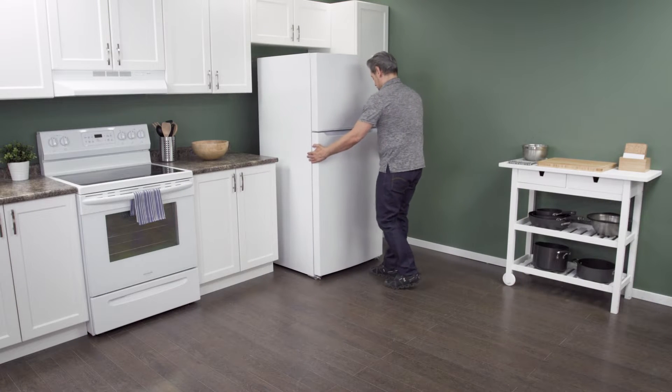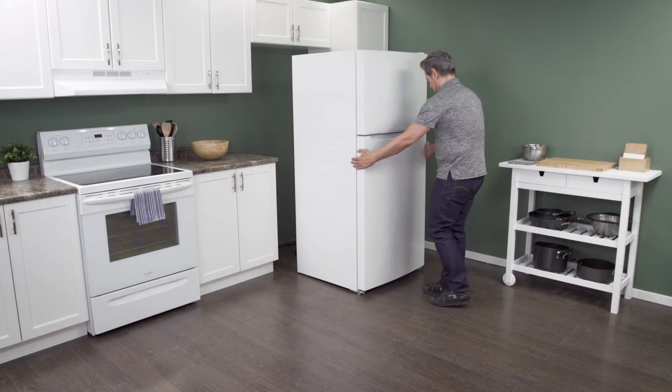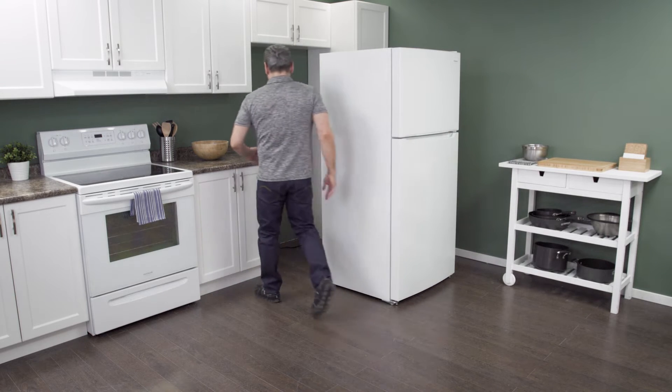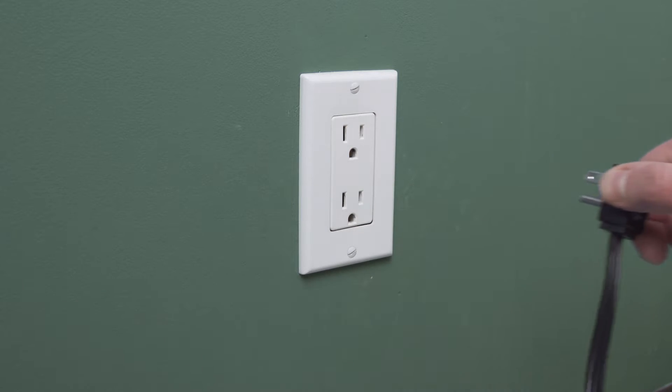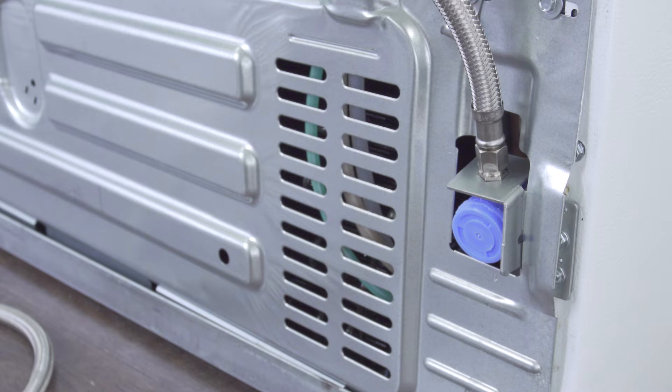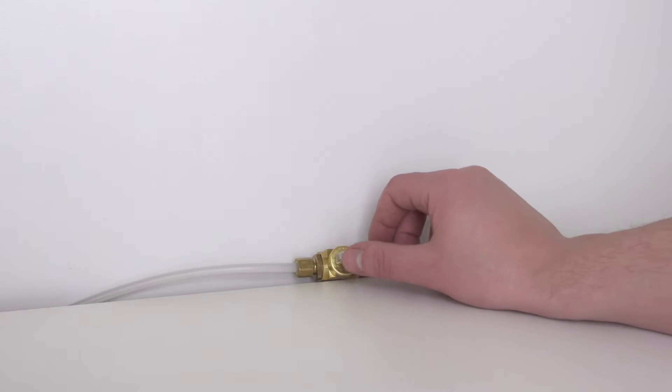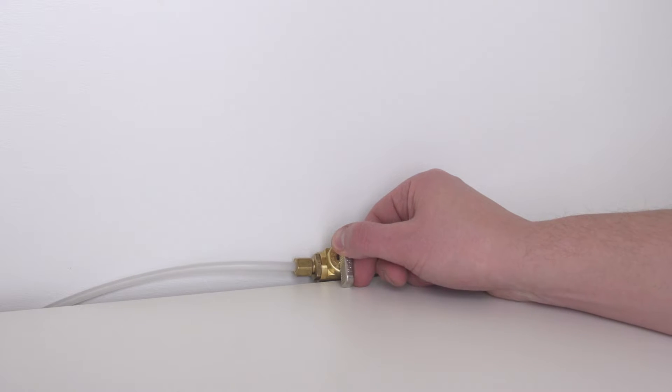First slide the refrigerator out from the wall. When there is enough room unplug the cord to disconnect the power. In some models you might need to remove the water supply line to gain access to the back. Close the shutoff valve to turn off the water supply.